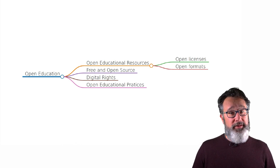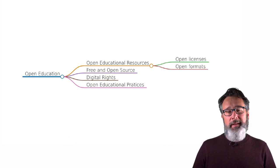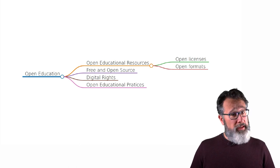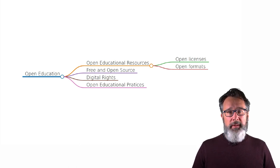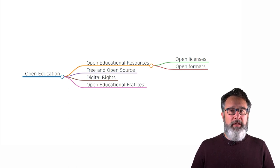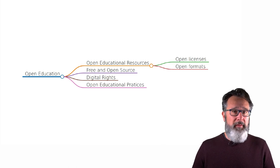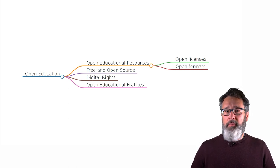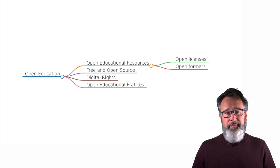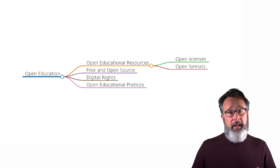The third aspect to consider is digital rights — it's an integral part of open education. Most of what we do in open education and when dealing with open educational resources will be in some form involved in a digital platform, whether it's a learning management system or a website. If you develop any sort of content like video, a presentation, or a document, you have to post it somewhere. It then becomes important to think about issues like privacy, data collection, and advertisements.